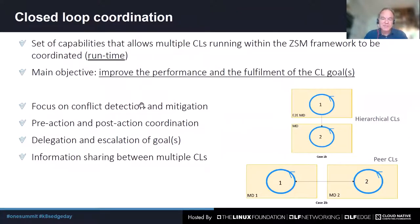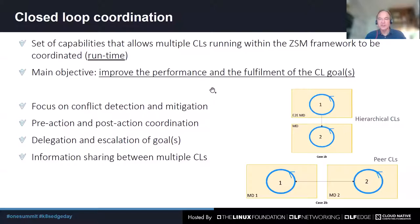In the ZSM 9-1 specification, there is also information about closed loop coordination. It's a set of capabilities that allows multiple closed loops running within the ZSM framework to be coordinated in runtime. The main objective is to improve the performance and the fulfillment of the closed loop goals. Focus areas include conflict detection and mitigation, pre-action and post-action coordination, delegation and escalation of goals — like in the hierarchical closed loop case — or information sharing between multiple closed loops, as in the peer closed loops example.